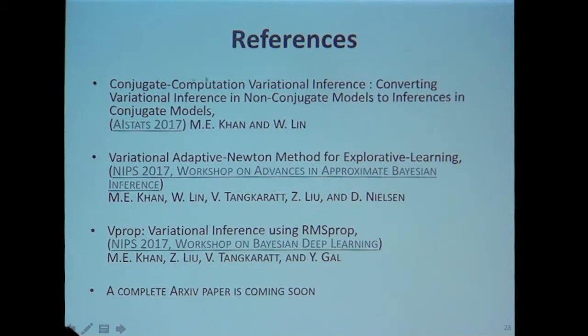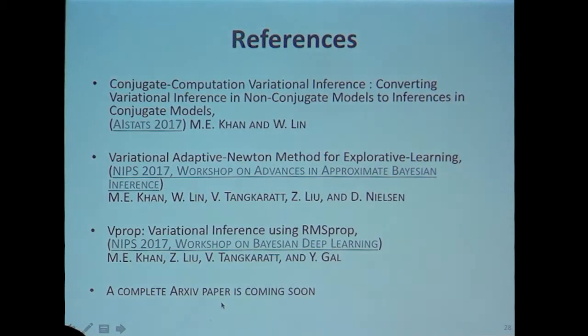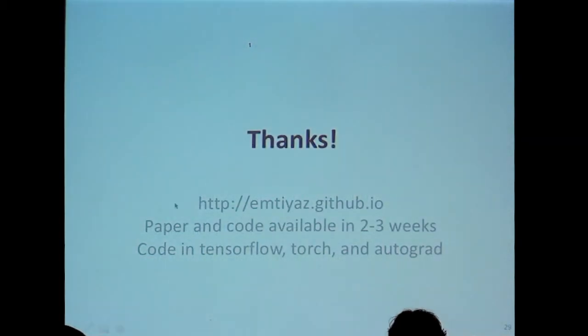The mirror descent connection is in the paper Conjugate Computation Variational Inference from AI Stats. The connection to RMSProp and Newton methods is discussed in the archive paper, which should be out in two to three weeks. The code will be available in TensorFlow, Theano, and Autograd on my webpage. I hope you'll use it.